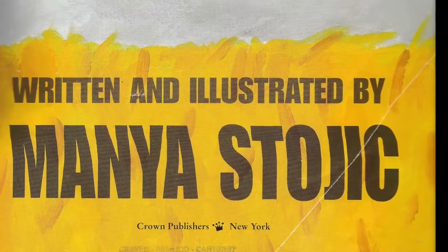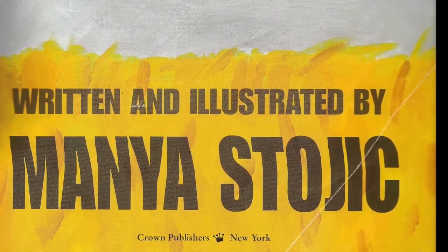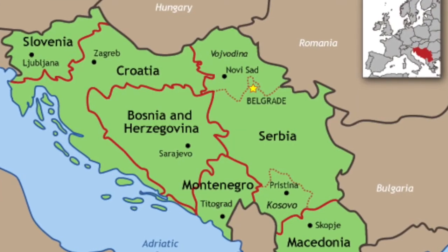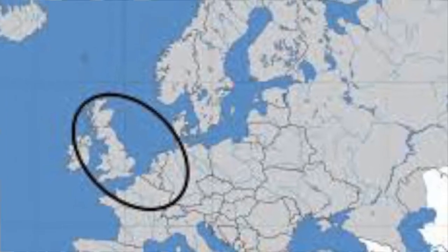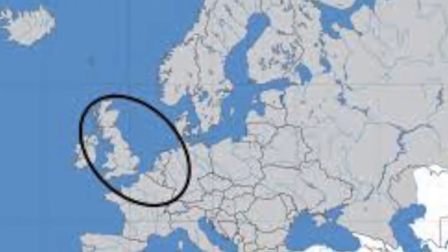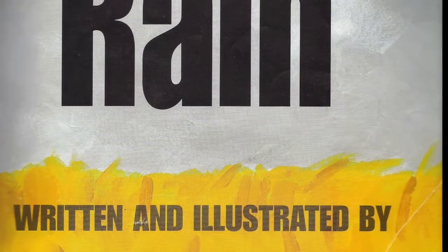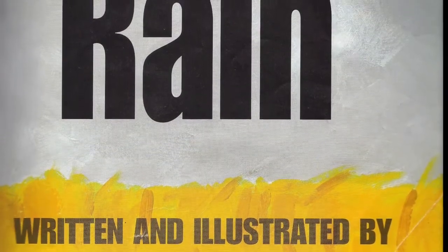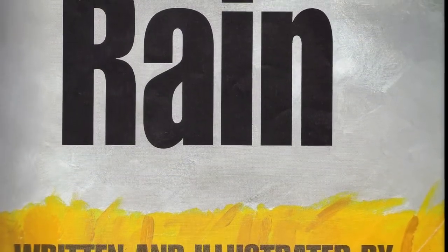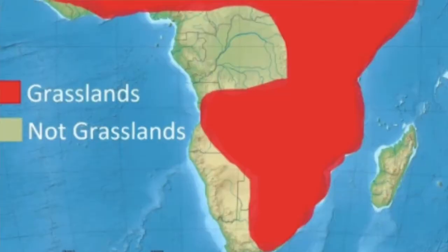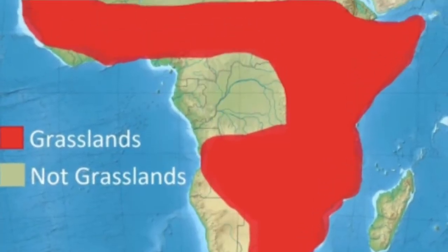Manja Stojic was born in Yugoslavia. Now she lives in England. She went to college to become an artist. Ms. Stojic has lived in many places, including the United States. She made up the story for Rain while living in Africa.